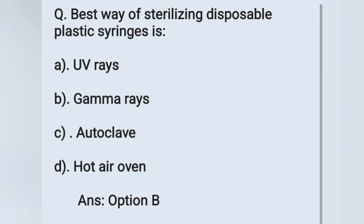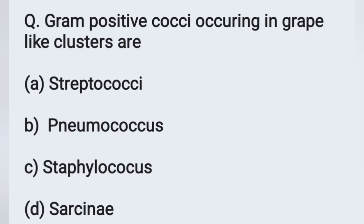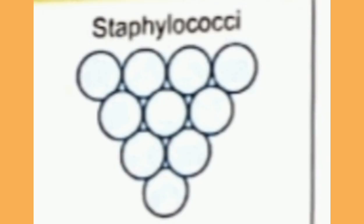The next question: Gram positive bacteria occurring in grape-like clusters are — option A: Streptococcus, option B: Pneumococcus, option C: Staphylococcus, option D: Sarcina. Gram positive bacteria occurring in grape-like clusters is Staphylococcus. Option C is the correct answer.